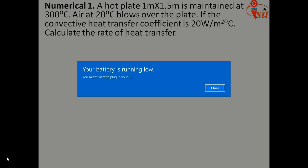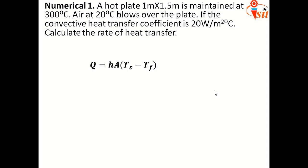So, after getting this, now Q is equal to HA into bracket Ts minus Tf. We have to use this formula. Why? Because they have given the convective heat transfer coefficient. Why we are using this formula? Because as per the Newton's law of cooling. Now, simply what we have to do? We need to put the values.